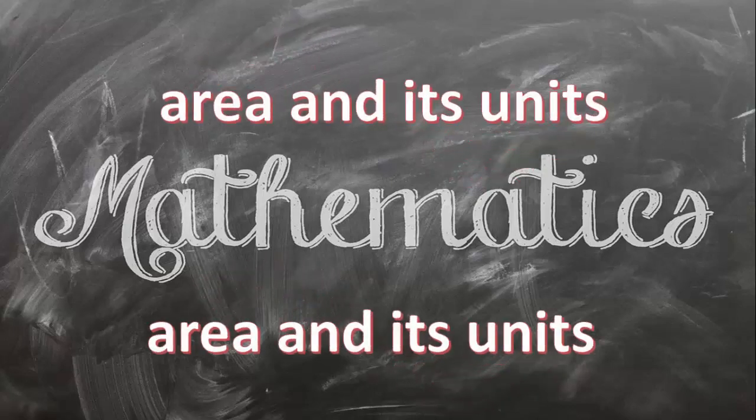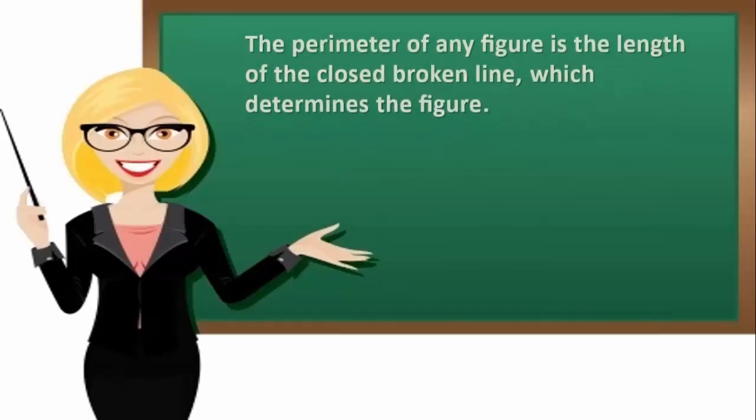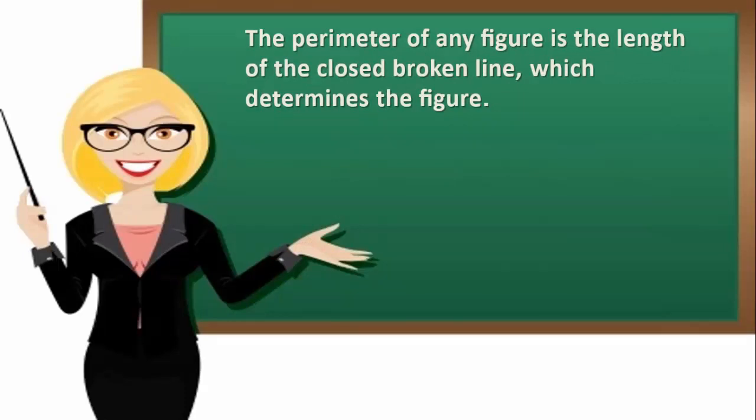Area and its units. The perimeter of any figure is the length of the closed broken line which determines the figure.